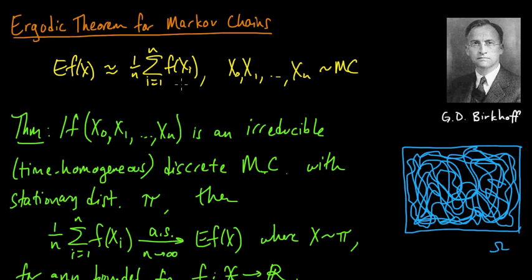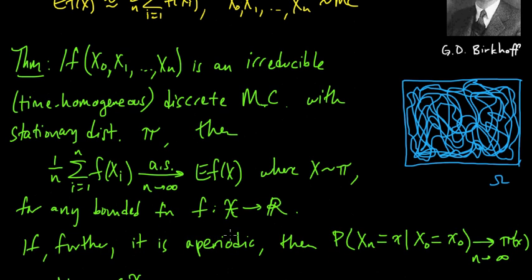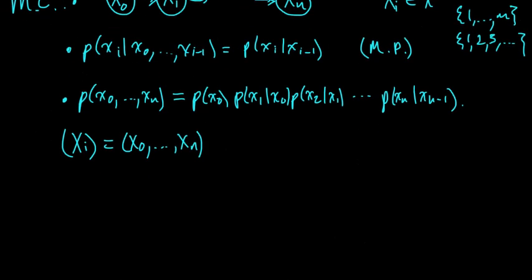In the previous video, we saw the Ergodic theorem for Markov chains, and now we need to define what the terms used in the statement of the theorem mean. A discrete Markov chain which satisfies the properties that it's irreducible, has a stationary distribution, and is aperiodic, is called an Ergodic Markov chain. That's why it's called the Ergodic theorem for Markov chains. Let's define some of these terms.